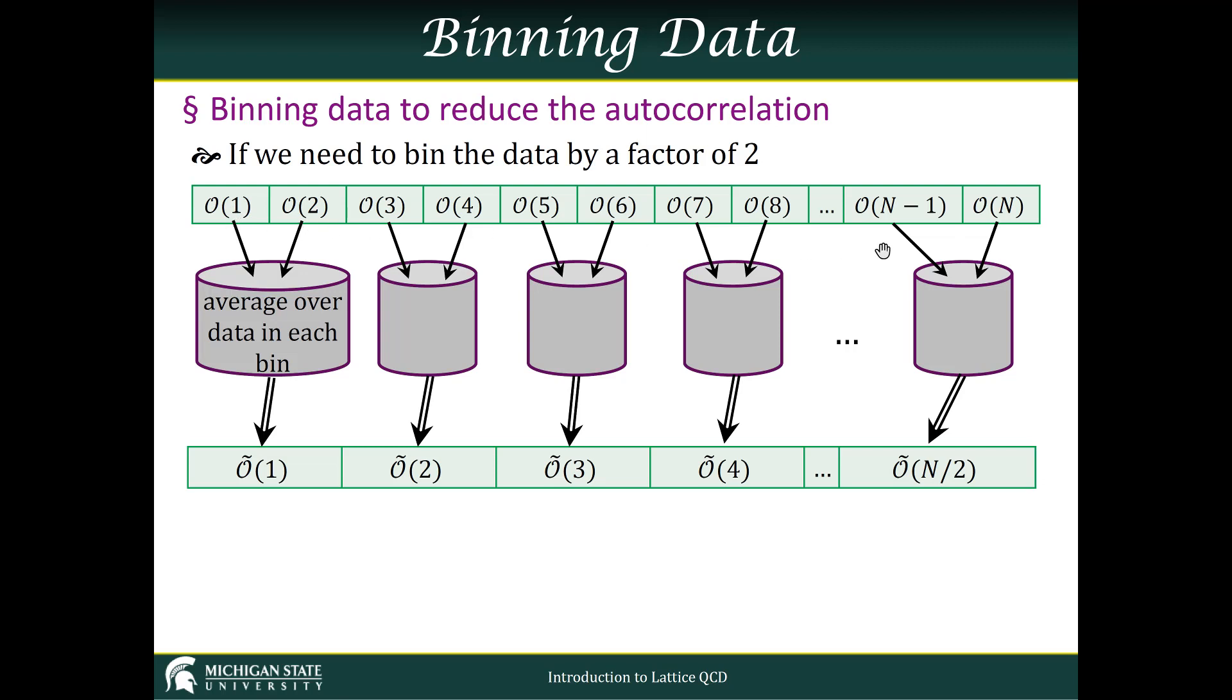two, and so on, up to our n configurations. You take each set of two configurations that are adjacent to each other in Monte Carlo time, and average over them. Obviously, we could do this same procedure not for two, but for some larger number.